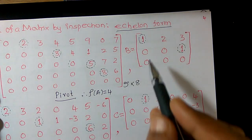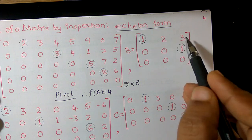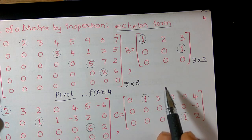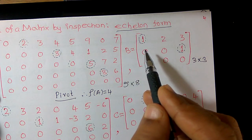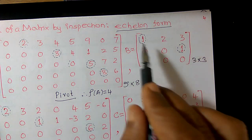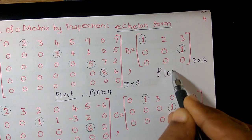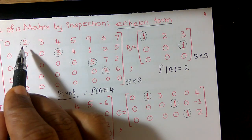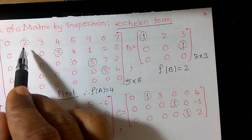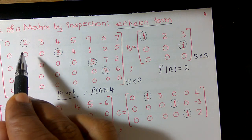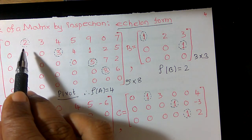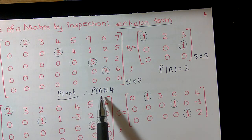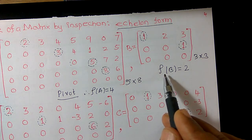The echelon matrix B is a 3×3 matrix with entries 1, 2, 3 in the first row and 0, 0, 1 in the third row. Counting the pivot elements: 1 and 1 — only 2 elements. Therefore rank of B is equal to 2. In another matrix A, the pivot elements are 2, 1, and 6 — that is 3 pivot elements, so rank of A is equal to 3.